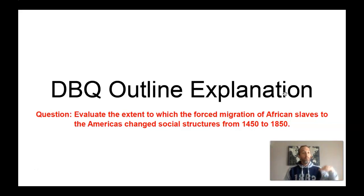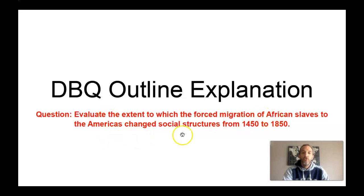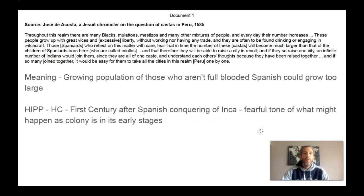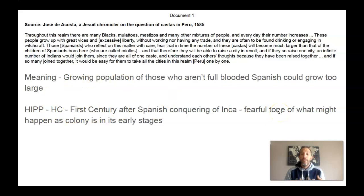The question was: evaluate the extent to which forced migration — so we're talking forced migration of African slaves to the Americas, Africans coming to the Americas — changed social structures, 1450 to 1850. This is document one. I'm not going to read through all this; I just want to let you know the meaning I came up with was the growing population of those who aren't full-blooded Spanish could grow too large and overthrow the Spanish.